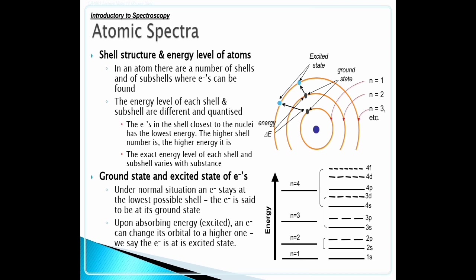The energy level of each shell and subshell are different and quantized. The electrons in the shell closest to the nucleus have the lowest energy. The higher the shell number, the higher the energy.